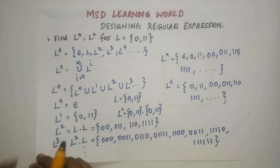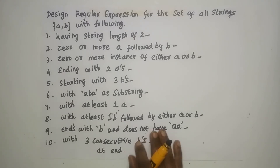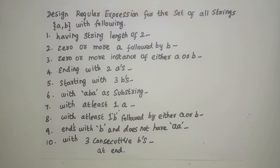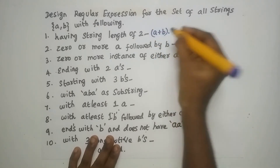Now let us see how to design a regular expression for any given problem. Design a regular expression for the set of all strings over {A, B} with string length 2 — meaning only 2 symbols must be there, each being either A or B. So you can have (A + B) concatenated with (A + B).